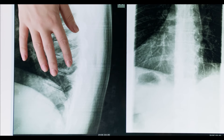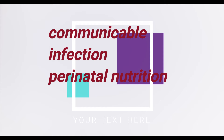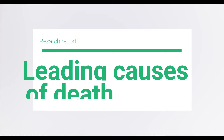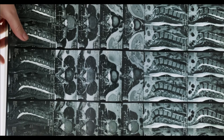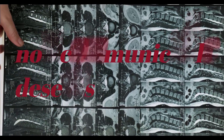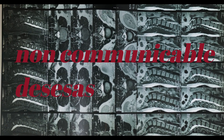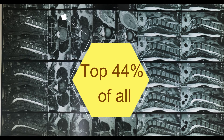Causes of death can be grouped into three categories: communicable, infectious and parasitic diseases, and maternal, perinatal and nutritional conditions; non-communicable chronic diseases; and injuries. At a global level, seven of the ten leading causes of deaths in 2019 were non-communicable diseases, accounting for 44% of all deaths, or 80% of the top 10.